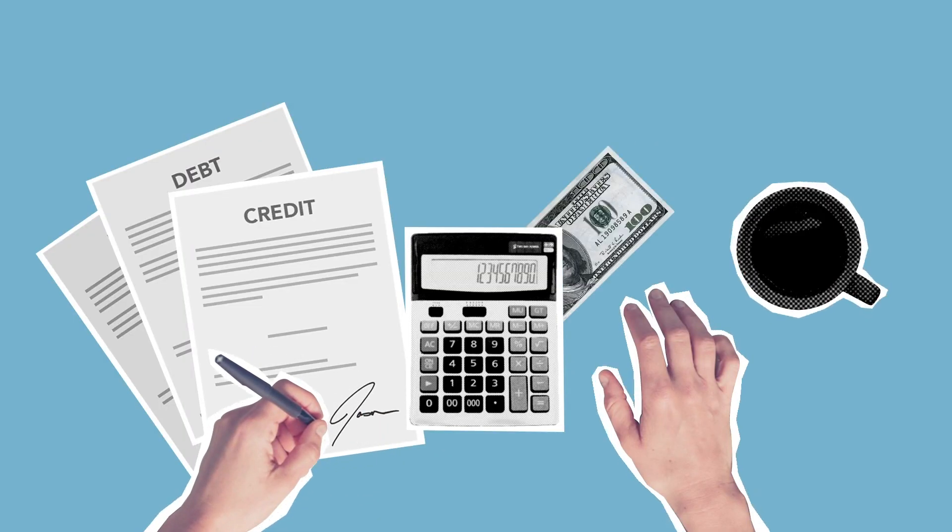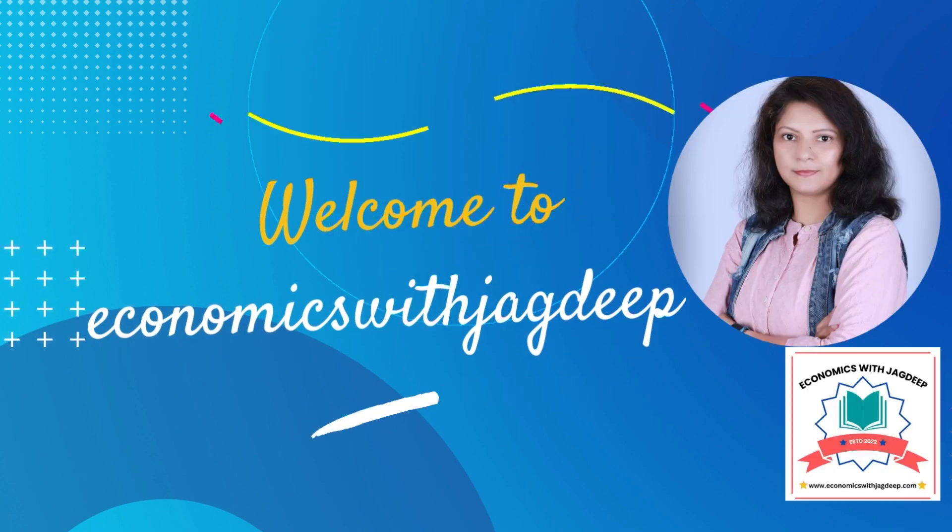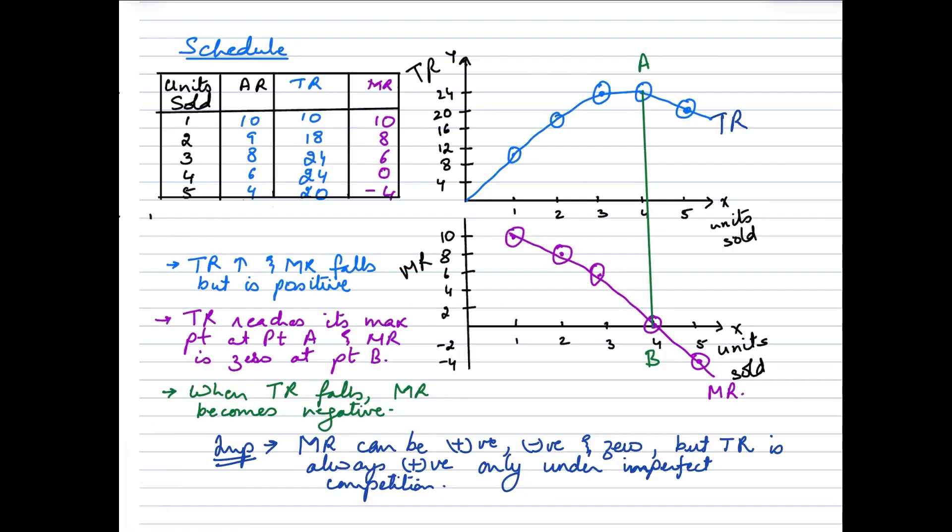Now this is how the schedule and diagram would look like. Let's take a look at the schedule first. So when we take a look at the schedule we see that we have units sold lined up from one to five. We have total revenue which is a multiplication of price into quantity, so it's basically the multiplication between these two numbers and this is how you get the total revenue figures.